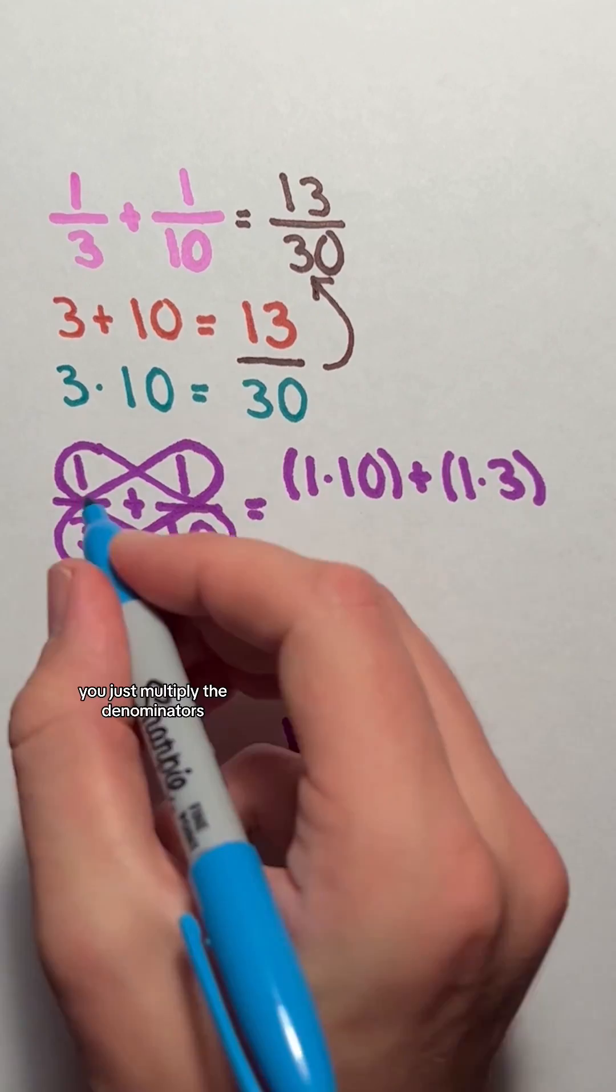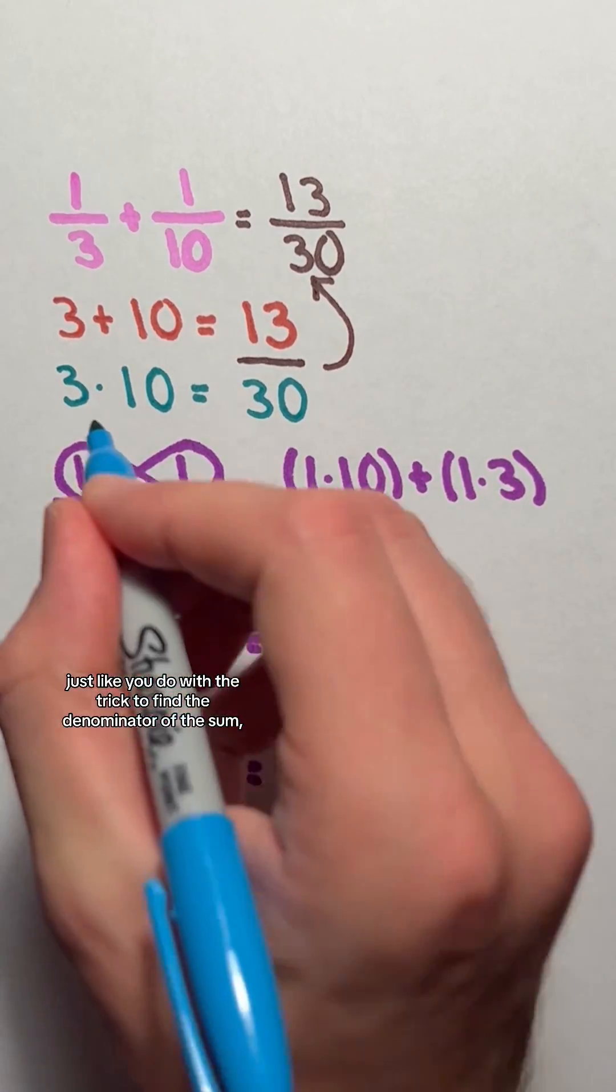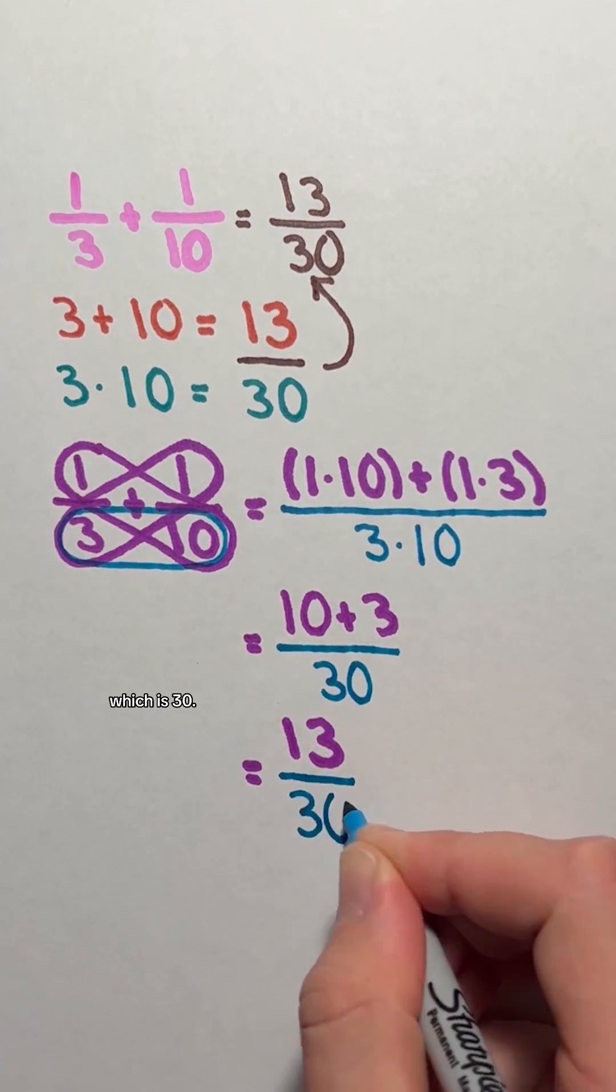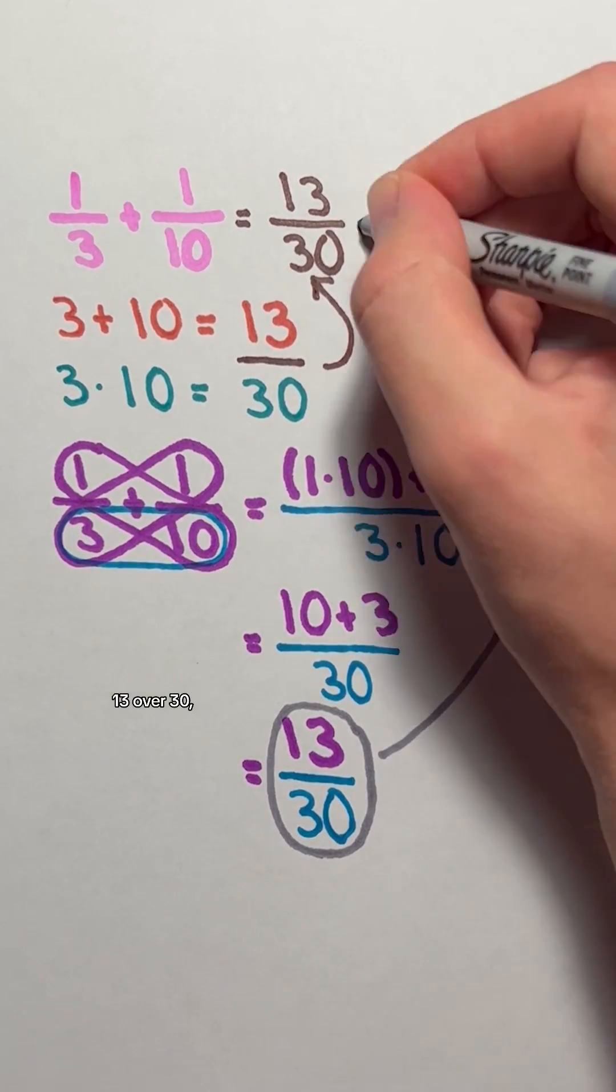With the butterfly method, you just multiply the denominators just like you do with the trick to find the denominator of the sum. So 3 times 10, which is 30. We got the same result, 13 over 30, and explained why this trick works with unit fractions.